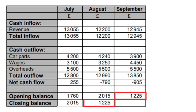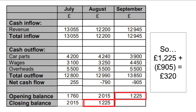For the final example: the closing balance in August is £1,225, which becomes the opening balance for September. We know the net cash flow is minus £905. So we do £1,225 plus minus £905, giving a closing balance of £320. They started the month positively, and although they have a negative net cash flow, it's not enough to make the closing balance negative. The closing balance has dipped quite significantly but remains positive.